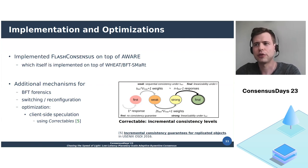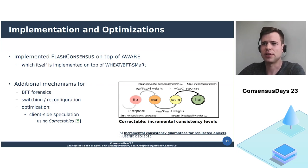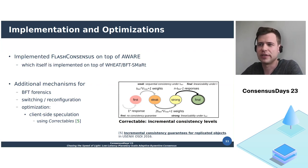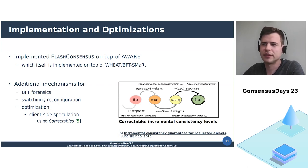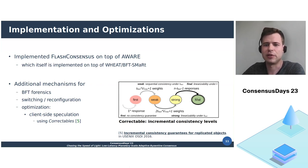The first level is the result of the first response received, which comes without any correctness guarantee. Weak provides sequential consistency, provided there are no more than T-FAST failures in the system. Strong provides linearizability — the standard guarantee of state machine replication — but only when there are no more than T-FAST failures. Lastly, final provides linearizability under the optimal resilience threshold.